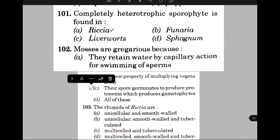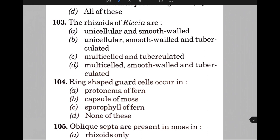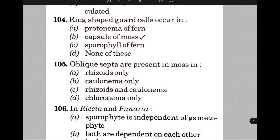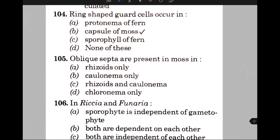The rhizoids of Riccia are — the answer is option B, that is unicellular, smooth-walled and tuberculated. Ring-shaped guard cells occur in — the answer is B, that is capsule of moss. Oblique septa are present in moss in — the answer is option C, that is rhizoids and caulonema. In Riccia and Funaria, which option is correct? The answer is D, that is gametophyte is independent of sporophyte.